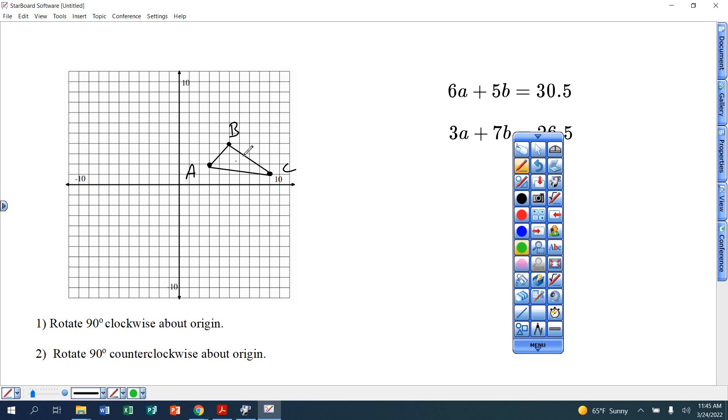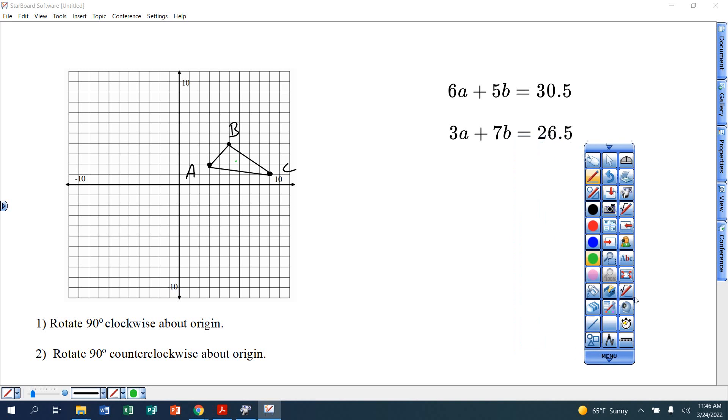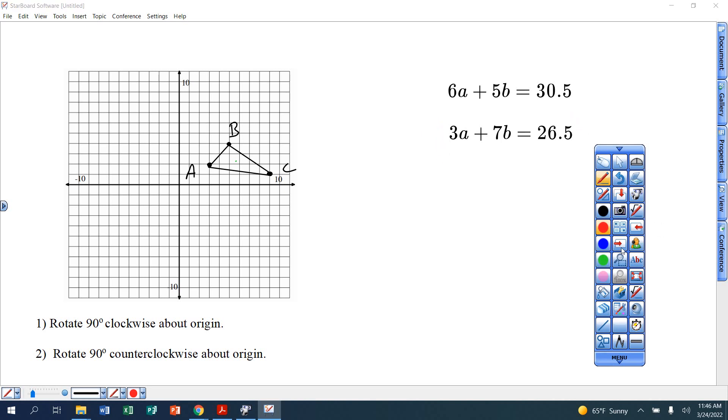I also want you to be able to solve this one where you're times in the bottom row by negative two again. Always going to make that same adjustment. Solve for a and b. I'd like you to do this one right here where I give you the equation of two lines.